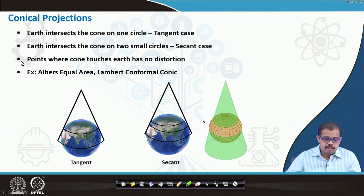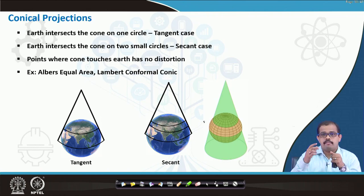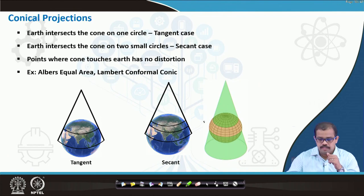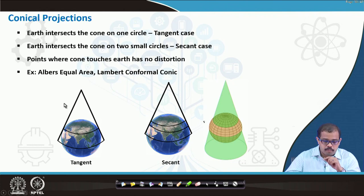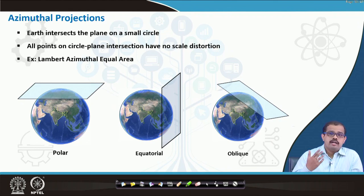When you look at the cone, it is based on conic projection and mid-latitude regions are where accurate representations can be found. If it is a tangent then it intersects at only one circle, whereas in a secant case it is at 2 points — that is how you differentiate a tangent and a secant. Points where the cone touches the earth have absolutely no distortions, but points on the non-touching surface have the most distortions. A good example of this is the Lambert conformal conic projection, which was used as an example in my previous slides.